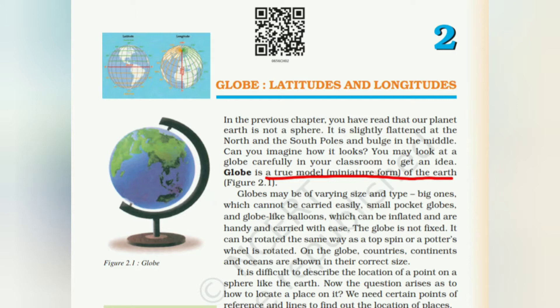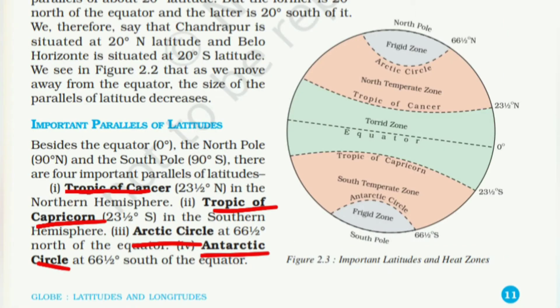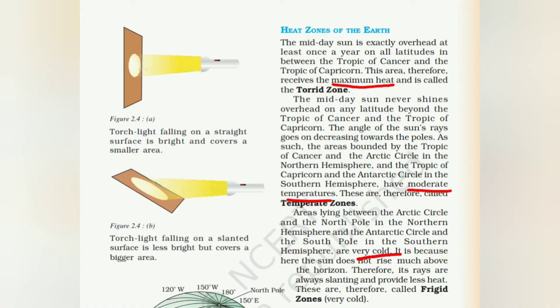Chapter 2 covers the Globe. A globe is a true miniature model of the Earth. The equator is an imaginary circular line and an important reference point representing zero degrees latitude. We have north and south latitudes. The important parallels of latitude include the Tropic of Cancer, Tropic of Capricorn, Arctic Circle, and Antarctic Circle. The Torrid Zone, between the Tropics of Cancer and Capricorn, receives maximum heat. The Temperate Zone has moderate temperature, and the Frigid Zone is very cold.